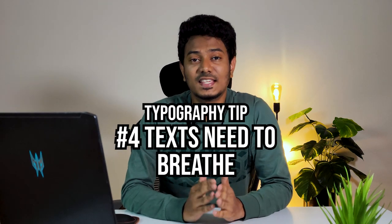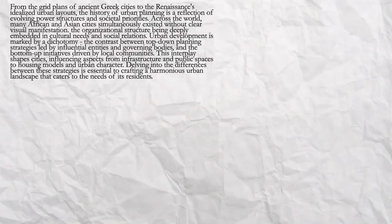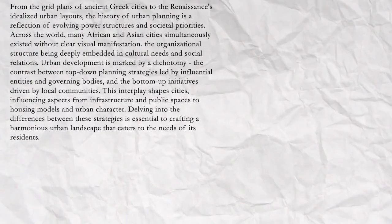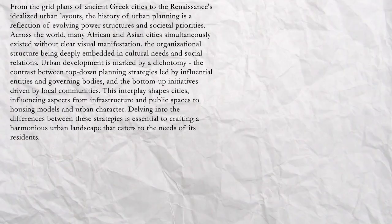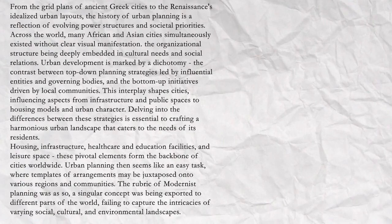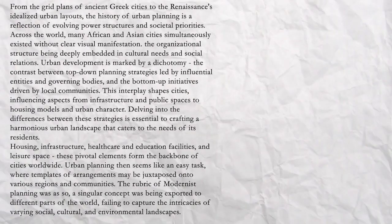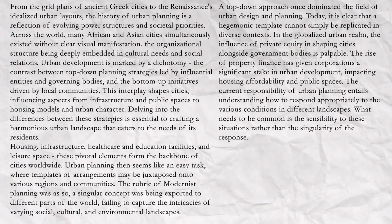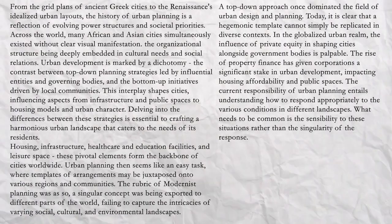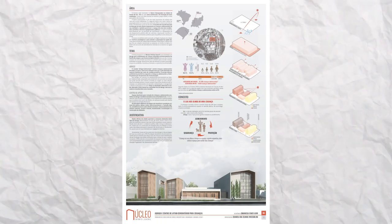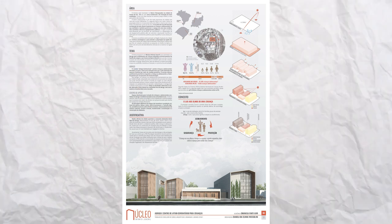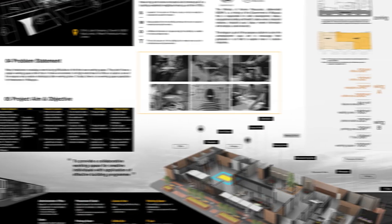Tip number four: text needs to breathe. The legibility of a paragraph depends on the letters, words, and text lines. In order for text to be readable, you need a fair amount of white space between them. Adjust the spacing and tracking to make them readable, and this also applies when you have multiple paragraphs together. It's always better to break long continuous paragraphs wherever possible, and you could also have a small two-line summary for any long passages.